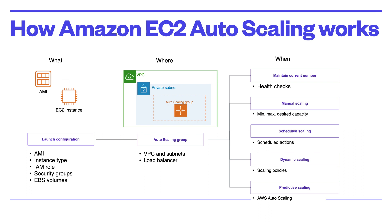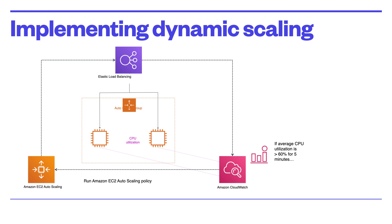One common configuration for implementing dynamic scaling is to create a CloudWatch alarm based on performance information from your EC2 instances or load balancer. When a performance threshold is breached, the alarm triggers an automatic scaling event that scales out or scales in EC2 instances in the auto scaling group. For example, you create a CloudWatch alarm to monitor CPU utilization across your fleet and run an auto scaling policy if the average CPU utilization goes above 60% for 5 minutes. Amazon Auto Scaling then initiates a new EC2 instance into your group based on the launch configuration you created.